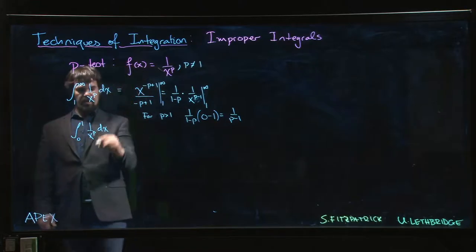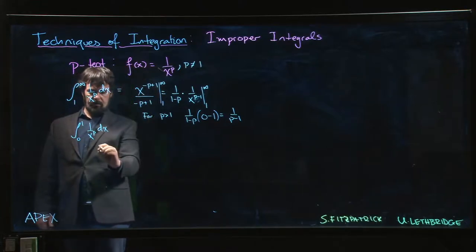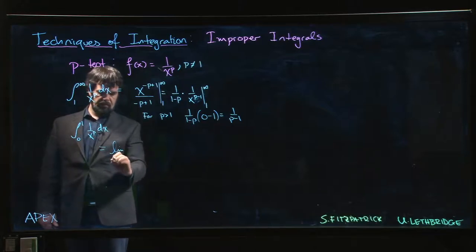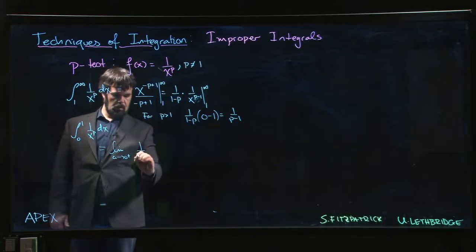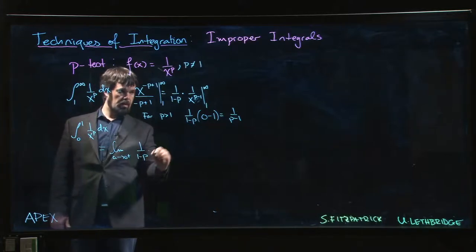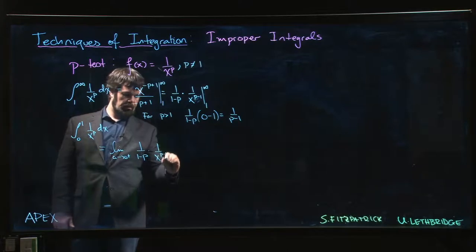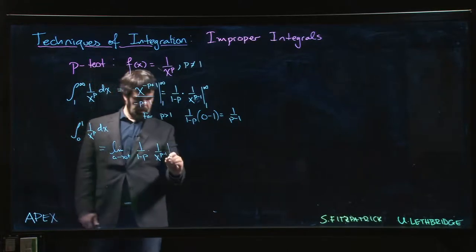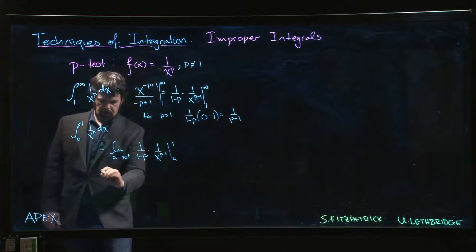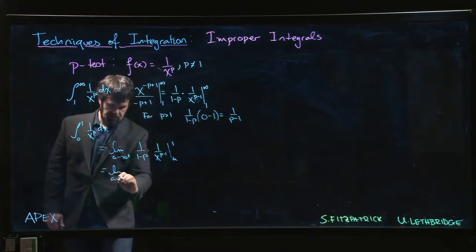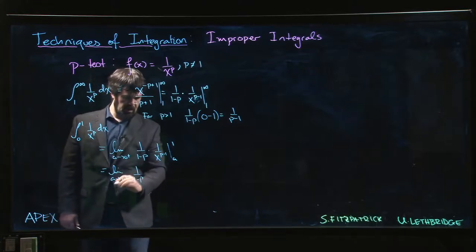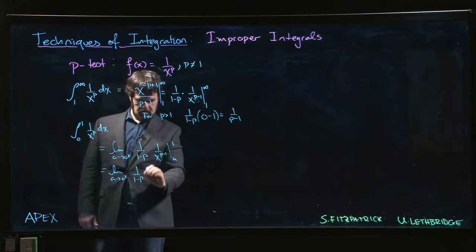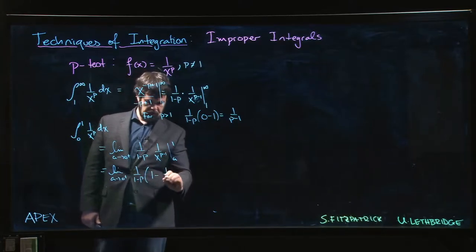And similarly here, I have the same antiderivative. So in this case, I would get the limit as a goes to 0 from the right of 1 over 1 minus p times 1 over x to the p minus 1. And I'm going to evaluate from a to 1. So I get the limit as a goes to 0 from the right of 1 over 1 minus p, and I get 1 minus 1 over a to the p minus 1.